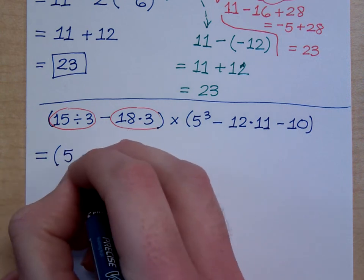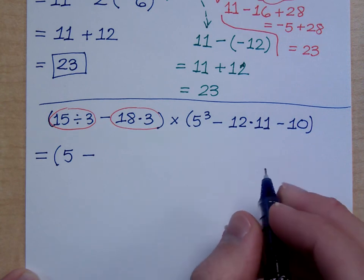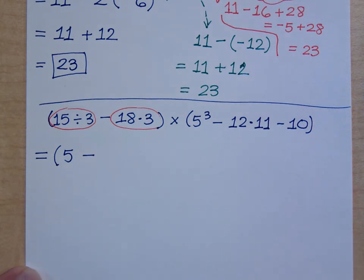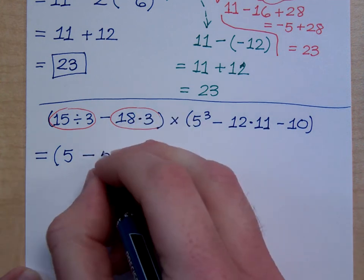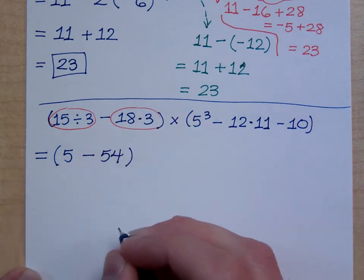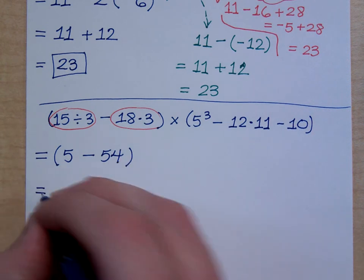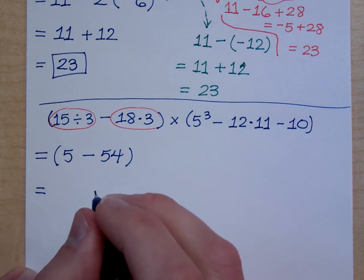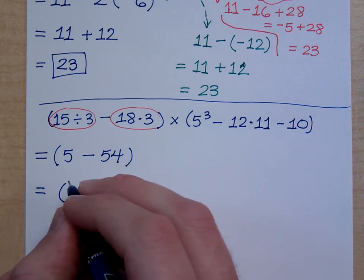You could even do distributive property here — look at 18 as 10 plus 8. 10 times 3 is 30, 8 times 3 is 24, so 30 plus 24 is 54. Then what's 5 minus 54? That's negative 49. Yes, the negative is important, and it is correct — negative 49.